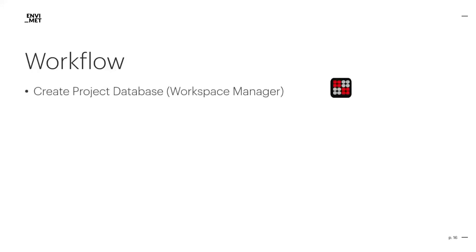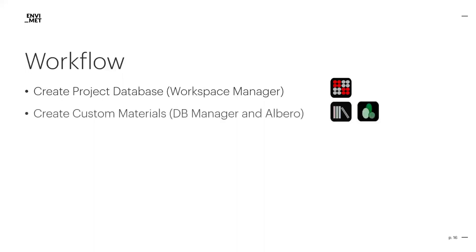After this overview on a few major modules and topics of EnviMet, let's have a look at the typical EnviMet workflow. At first, users need to create a project folder that will include all possible scenarios of a specific planning or research object. It makes sense to create a specific project database that only contains materials, plants, and so on that are specifically used in this project. Those custom materials can be created or edited in the DB Manager or database manager. The tree database can be modified in program Albero. There is of course already a huge database available with all kinds of materials, walls, roofs, plants, and traffic emission profiles that you can use for your simulations.